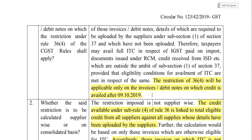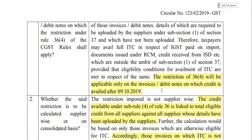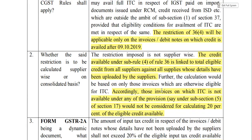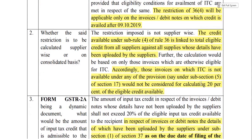This was a very important clarification from the government. The second question asked: whether the restriction under Rule 36 Sub-Rule 4 is to be calculated on a supply-wise or consolidated basis. The answer is that there will be no supply-wise calculation — it will be considered on a consolidated basis.